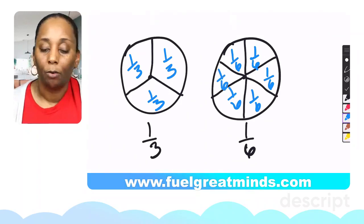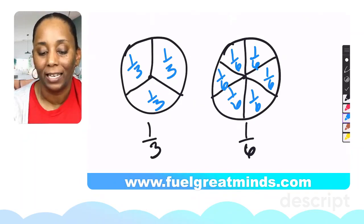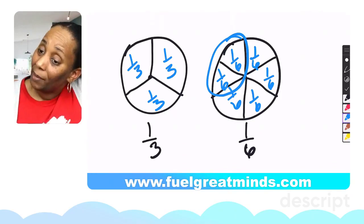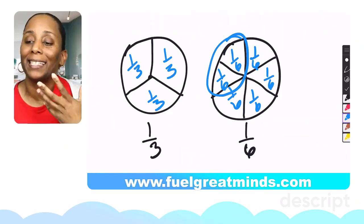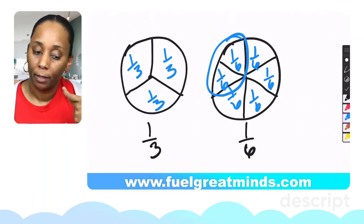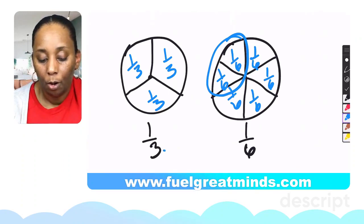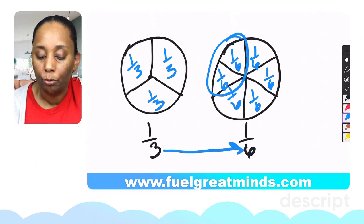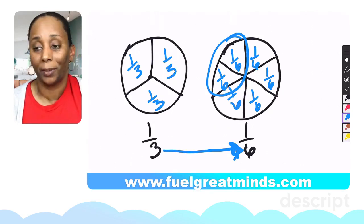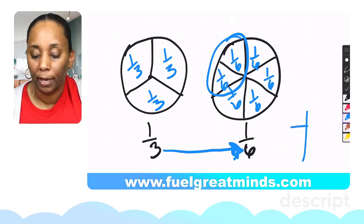The issue is that children cannot see on the fraction wheel that two sixths are the same as one third. Some kids are going to struggle with the multiplication, so a strategy you can put in place is the t-chart.